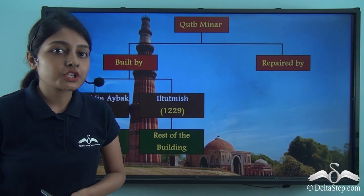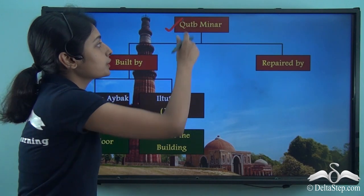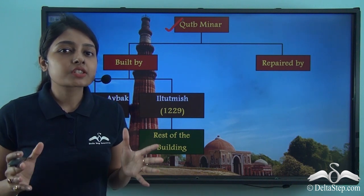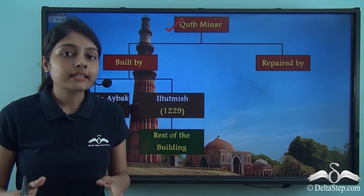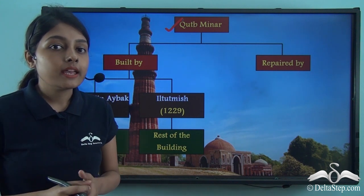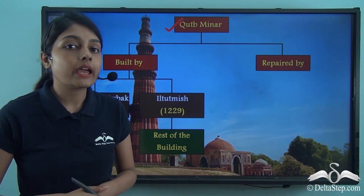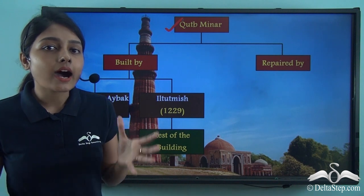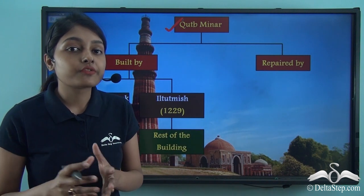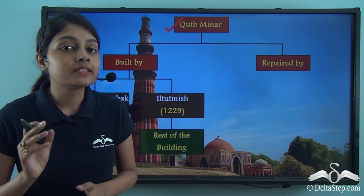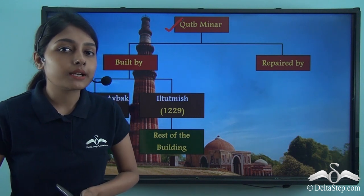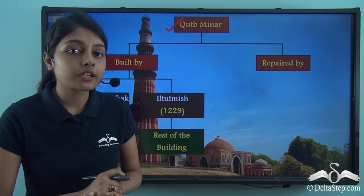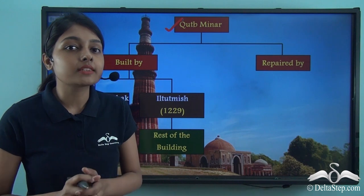Let us begin this discussion with the Qutub Minar. The Qutub Minar is located in Delhi. It is a five-story high minaret and under the arches of the first balcony, inscriptions are done in Arabic. It is a splendid and marvellous piece of architecture. When you go to visit Delhi, you must never leave out visiting the Qutub Minar. Now while we discuss the Qutub Minar, we have to understand the historical period or the time frame when it was constructed.